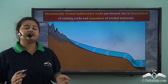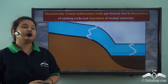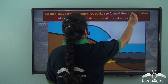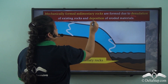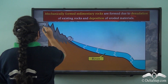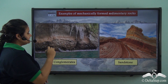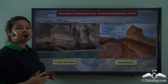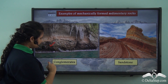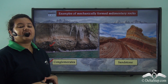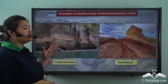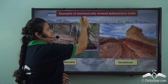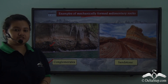This is how mechanically formed sedimentary rocks are formed. They are formed due to denudation of existing rocks and deposition of eroded materials. Have you ever seen these rounded structures in rocks? These rocks are called conglomerates. Conglomerates are usually found along the river beds and are examples of mechanically formed sedimentary rocks.